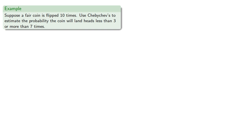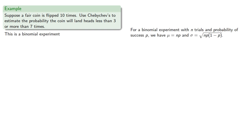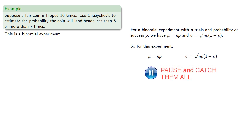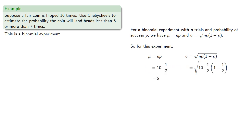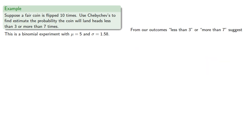Note that this is a binomial experiment. For a binomial experiment with n trials and probability of success p, the mean is np and the standard deviation is the square root of np(1 minus p). For this experiment, we find a mean of 5 and a standard deviation of 1.58. The outcomes less than 3 or more than 7 suggest that 7 is 5 plus 1.26 standard deviations and 3 is 5 minus 1.26 standard deviations, so we might let k equal 1.26.